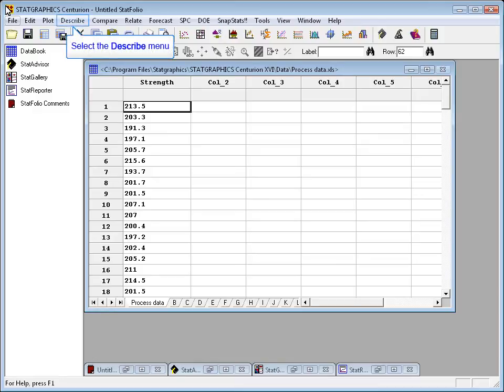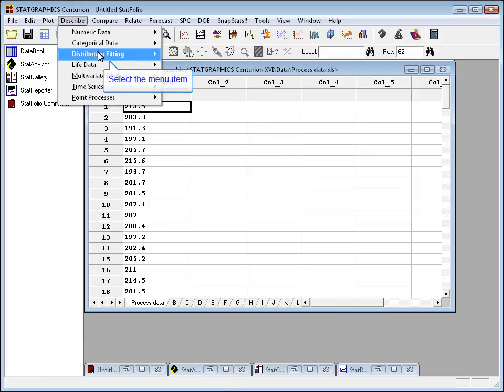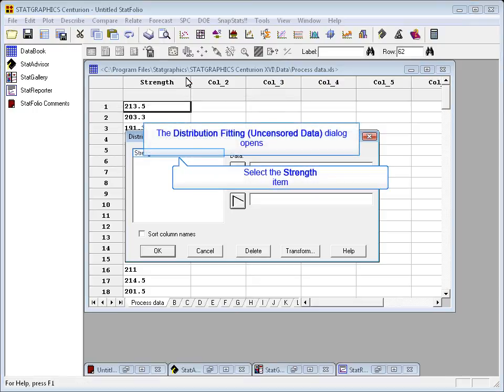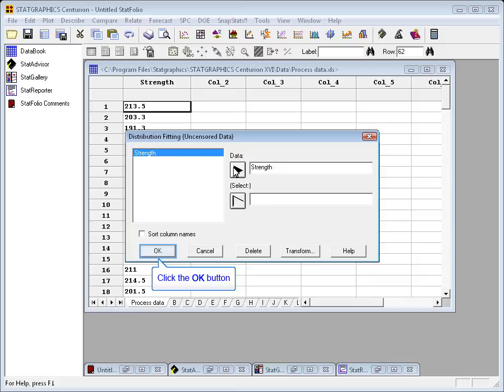To do this in StatGraphics, you go to the Describe menu, to the section on Distribution Fitting, and select Fitting Uncensored Data. The column of data I'm interested in here is Strength, so I'll press OK.